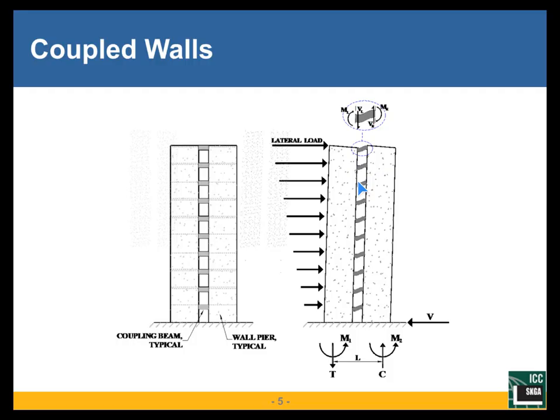Now if a coupled wall like that is subject to lateral forces due to wind or earthquakes, as shown in the picture, the overturning will cause tension in one of the walls and compression in the other wall. The couple due to the tension and compression will counteract much of the overturning moment, leaving only the remainder of the overturning moment to be resisted by the two shear wall segments.